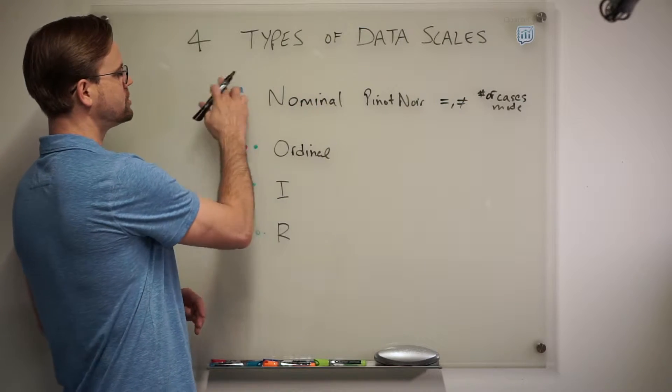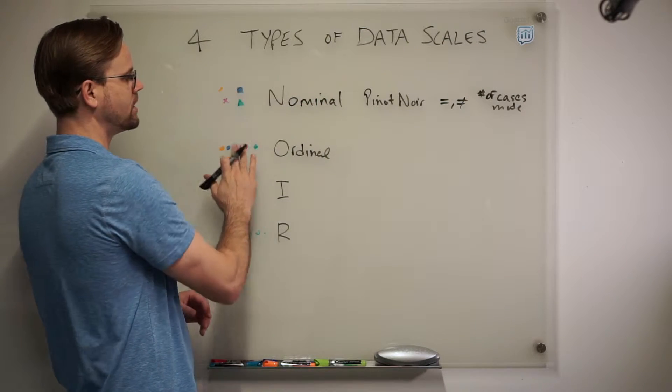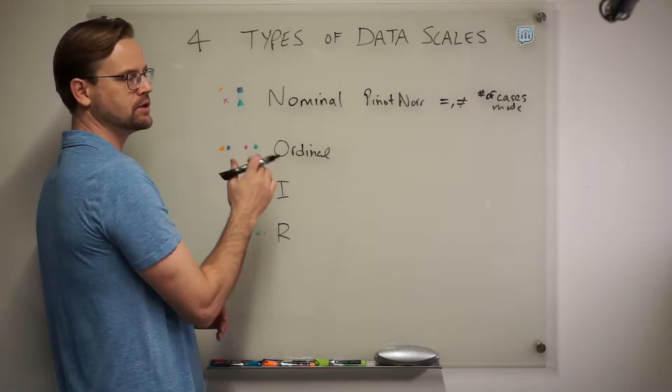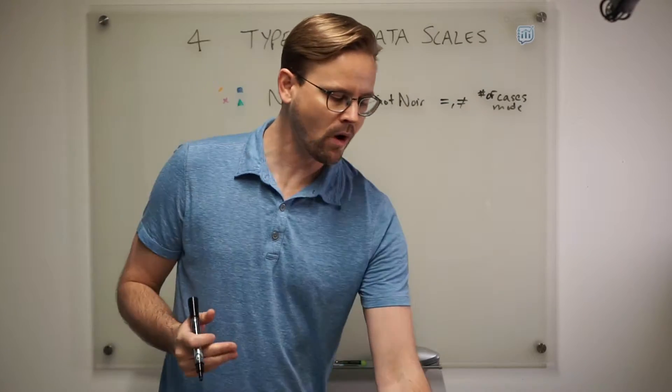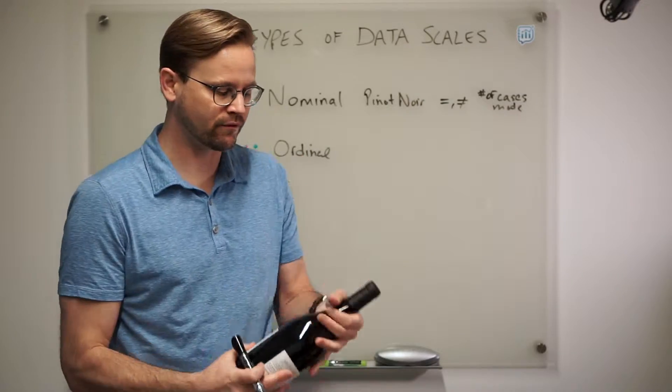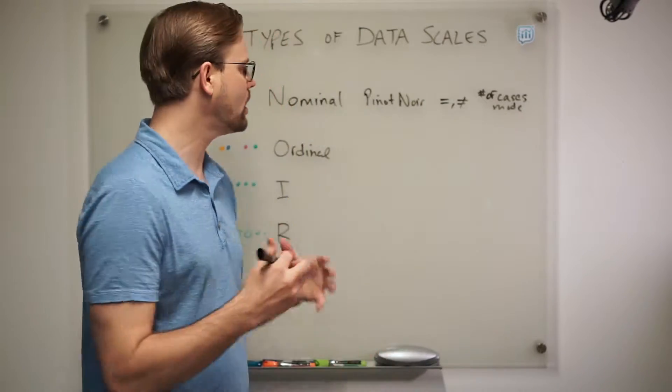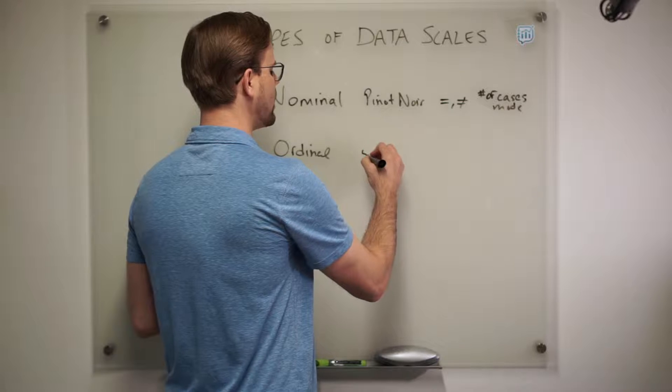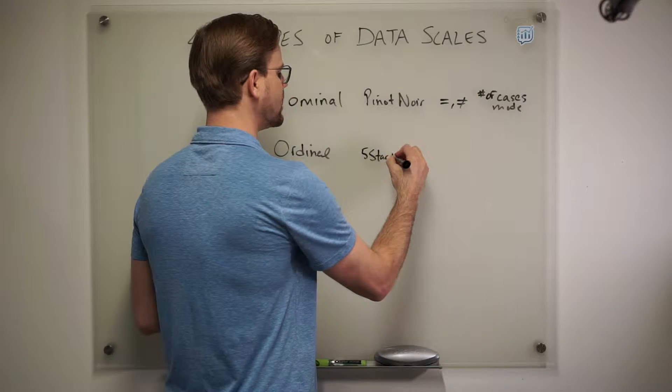Notice with nominal, they're just shapes scattered. There's no real order to them. In ordinal, they are in a certain line and in order. One is greater than or less than. So this could be in wine. Let's say maybe we rate the wine. Maybe I give it a five star. Maybe you give it a four star. That would be our way of saying how good we think the wine is. So there's an example of an ordinal data scale.